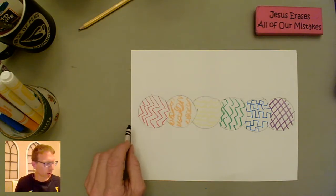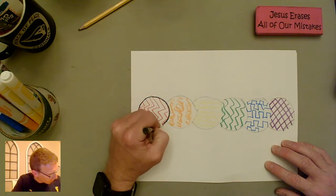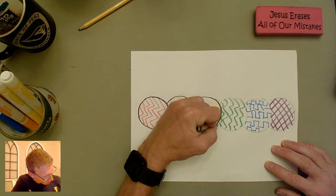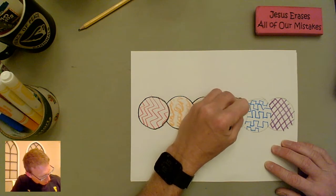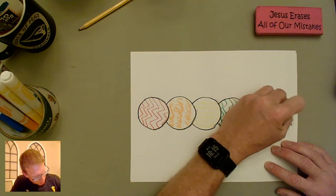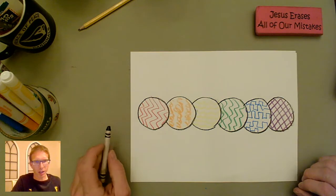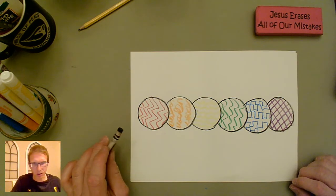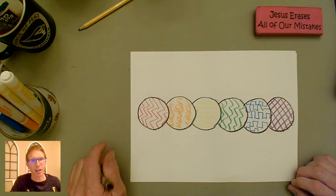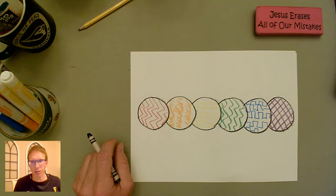So the first thing we're going to do before we start doing the watercolor or the marker is we're going to take our black crayon and we're going to trace around the outside of these. Something that I didn't mention in the first video and I probably should have is that you want to have regular crayons and not the ultra washable ones.